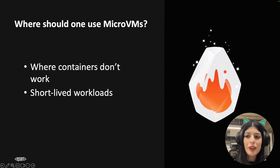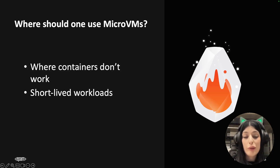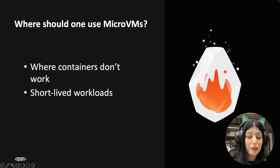Where should one use micro VMs? I would use micro VMs where containers don't work, and of course where you have short-lived workloads — it's exactly what Lambda functions are for. I'd also add a third reason: for students, when you don't want to spin up an entire virtual machine for them to train on, you can always try a micro VM.